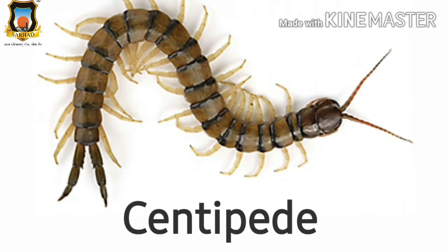The next rainy creature is centipede. Centipede is a small rainy creature. Centipede has a long thin body. Centipede has a hundred legs. Did you understand all the rainy creatures?